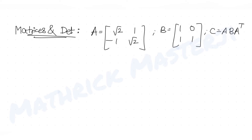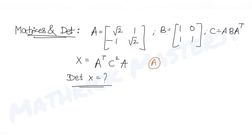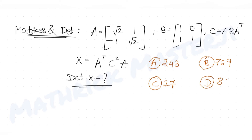The question further tells us C = A·B·Aᵀ, and X is defined by Aᵀ·X = Aᵀ·C²·A. We need to find the value of det(X). The answer choices are 243, 729, 27, and 891.